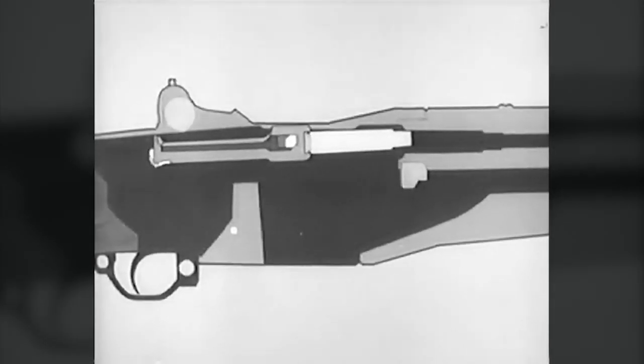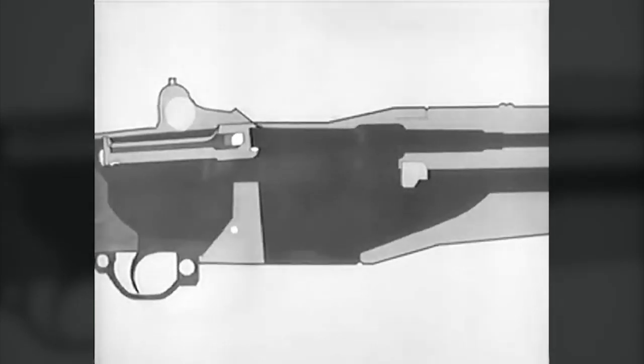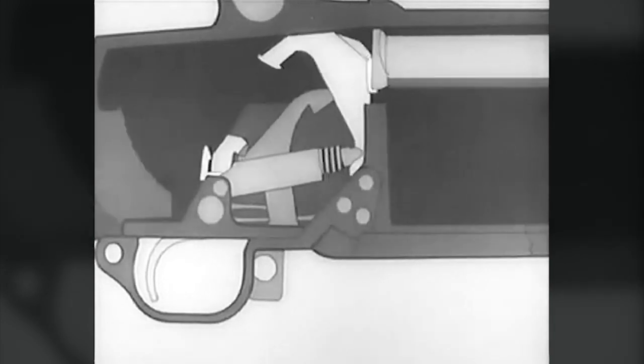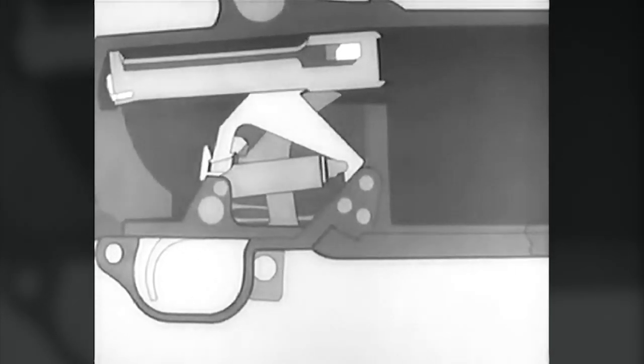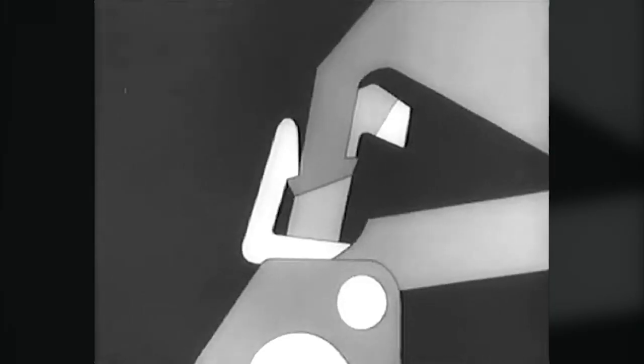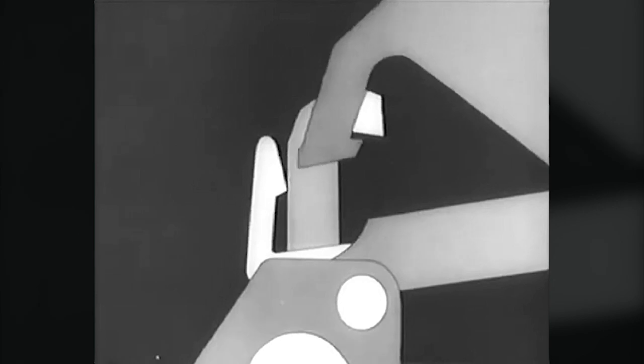The empty cartridge case is withdrawn and ejected. The bolt continues back and rides over the hammer. The hammer rotates back and is caught by the sear. Now the trigger is released. The hammer slips from the sear and is caught by the trigger lug.